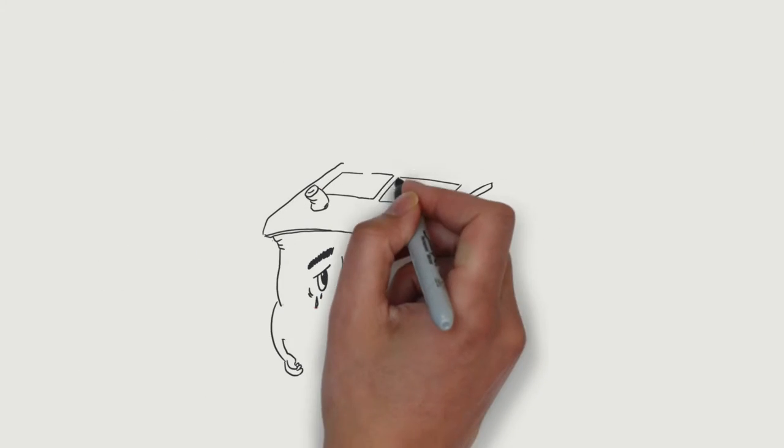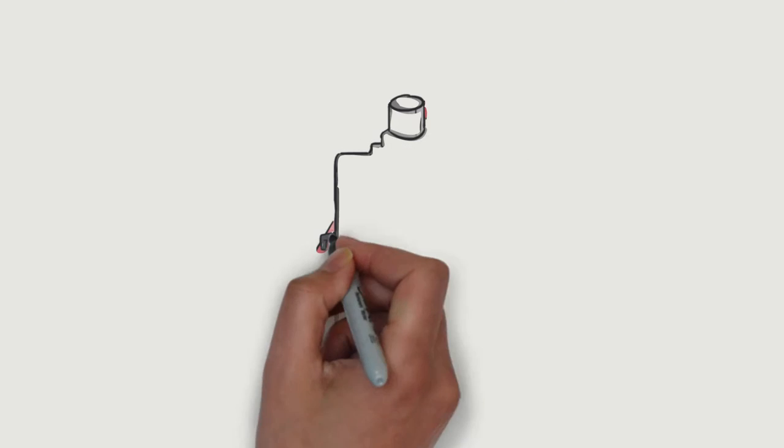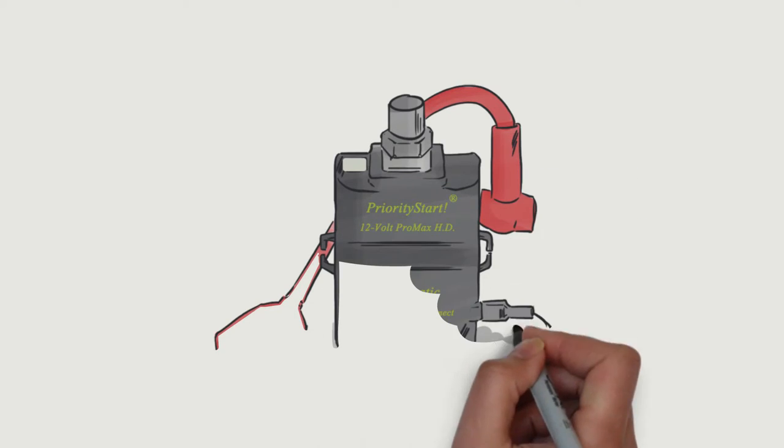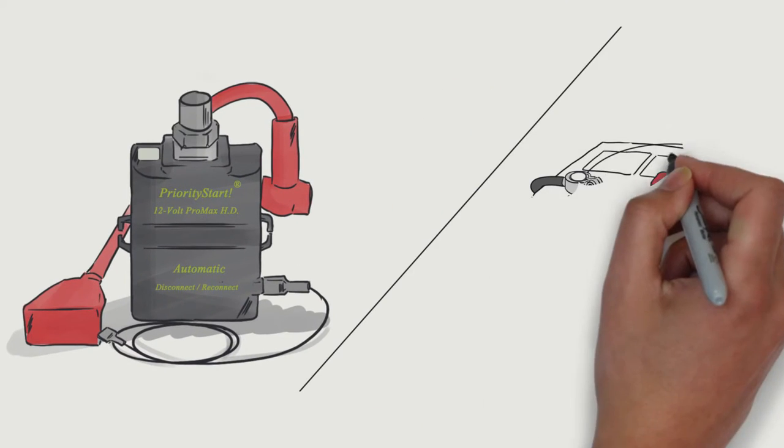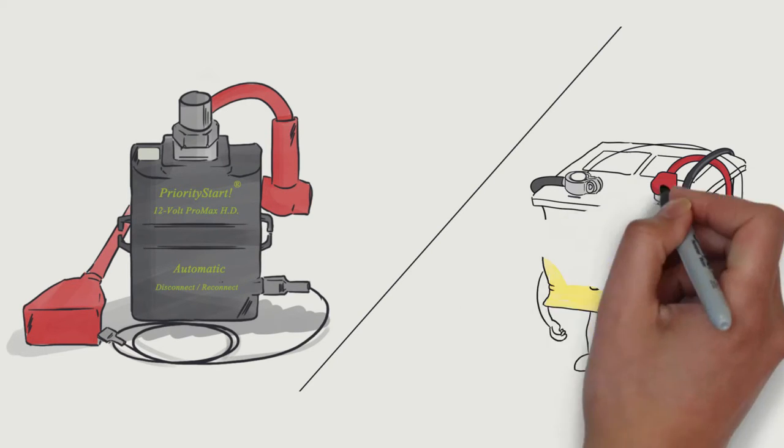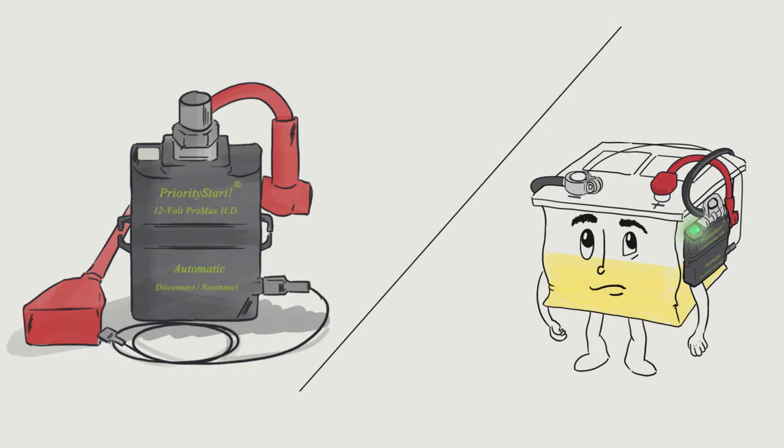With Priority Start, you won't get stuck. You'll get started. It automatically detects any drain on the battery when the engine is off. If the battery drops below starting voltage, it automatically disconnects all loads.